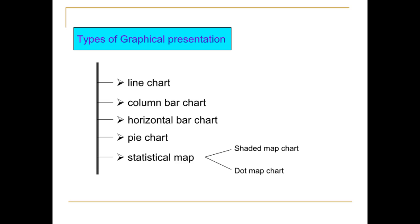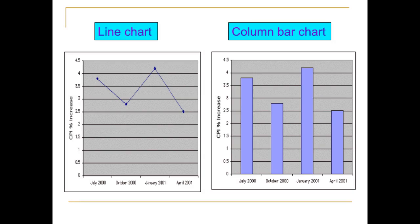Statistical map can be classified into shaded map chart and dot map chart. A line chart is a graphical representation that connects a series of data points with a continuous line. This is the most basic type of chart used to describe the trend of data over a period of time. The example shows the trend of the CPI percent increase over a period of time.